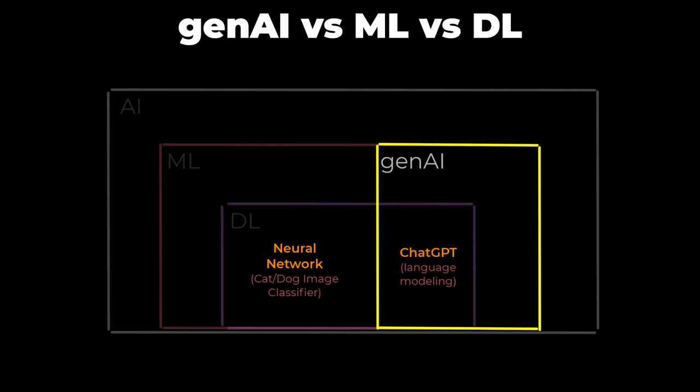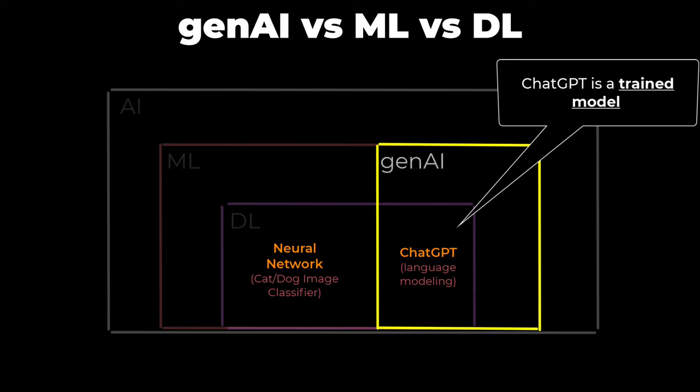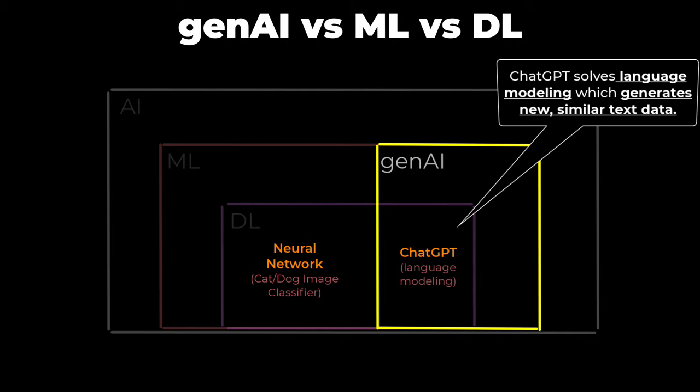A neural network language model like ChatGPT falls squarely in Gen AI — it is a trained model, and the problem being solved, which is language modeling, will generate new similar text data.